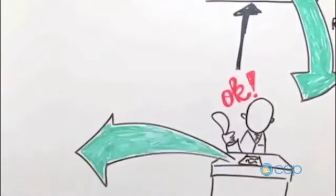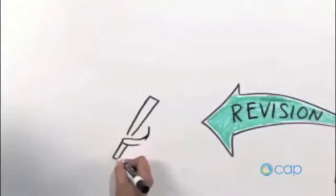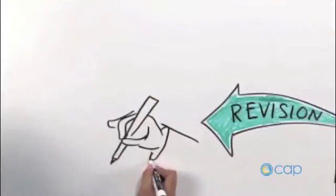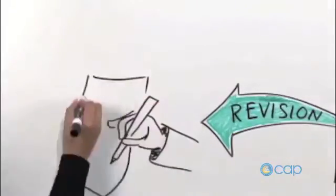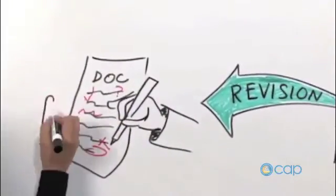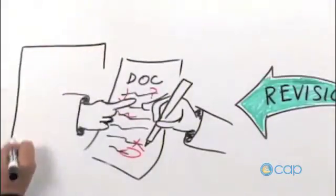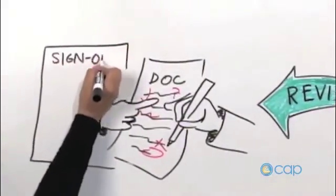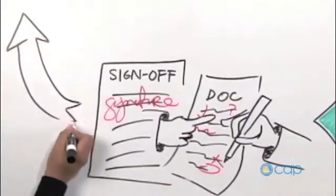In other cases, the reviewers will decide that the document needs to be revised. The document will go back through the initiation phase. A sign-off sheet will travel with the document until all the reviewers have approved and signed off on the changes.